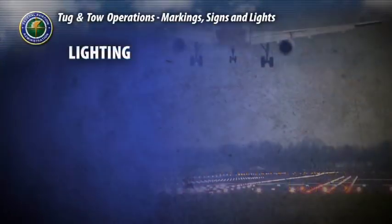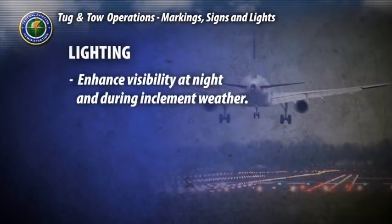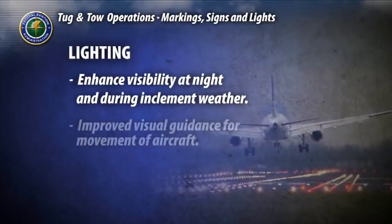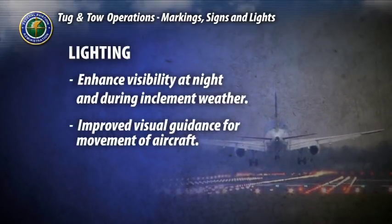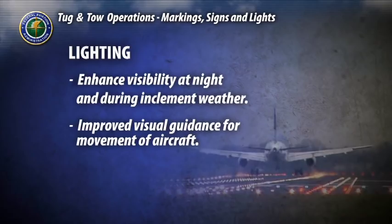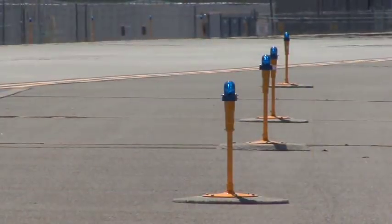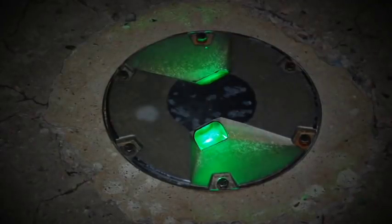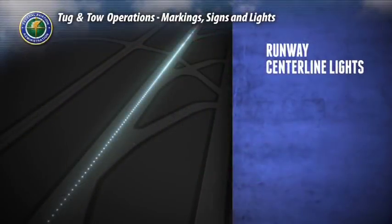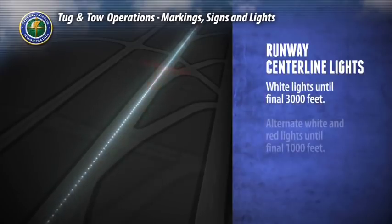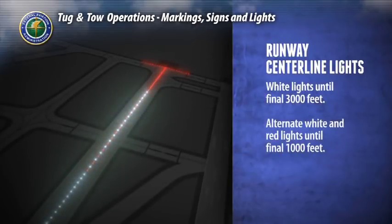Airport lighting is provided to enhance visibility at night and during inclement weather, and also provides improved visual guidance for the movement of aircraft and ground vehicles. Lights may be mounted on surface structures, above ground, and in pavement. On runways, centerline lights will be white with the exception of the final 3,000 feet — at 3,000 feet, red and white lights alternate until the final 1,000 feet of runway, in which continuous red lights are used.